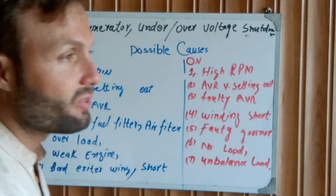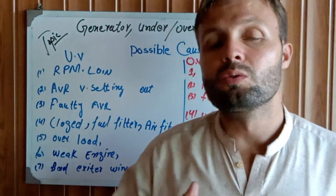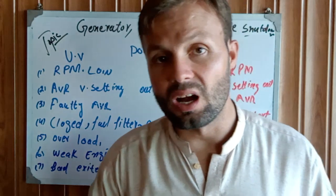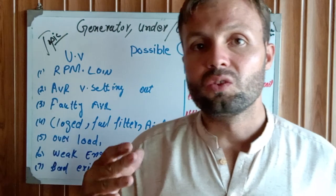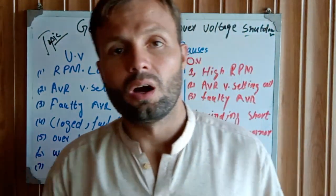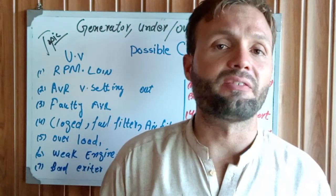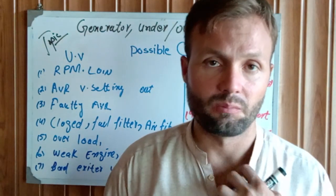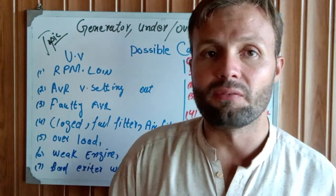Another cause is overload. If your engine is overloaded, the voltage drops and the engine RPM drops because too much load has been put on it. The engine cannot carry the overload. For example, if you have a 5 kilowatt generator, you cannot put 7 kilowatts of load on it — that means it is overloaded, which causes under voltage and the generator trips.